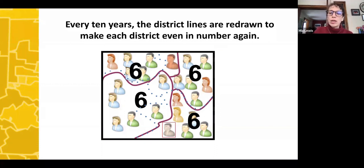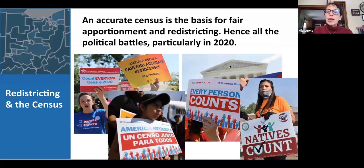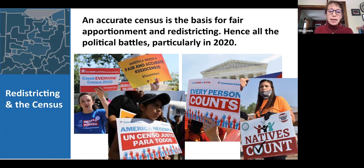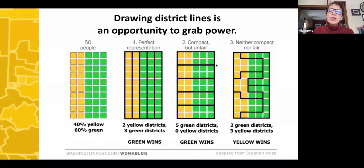Redistricting is done every 10 years after the U.S. Census. The Census is part of the Constitution — we count everybody so we know where people live and can ensure representational fairness with equal population in all districts. The census can lead to political battles, and it's been complicated this time by COVID, because there are delays in the delivery of census data that will have an impact on redistricting.